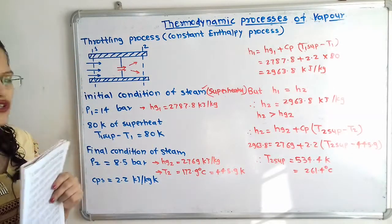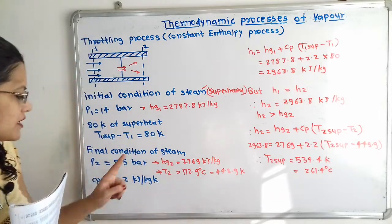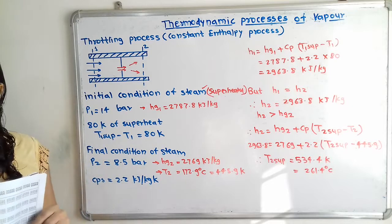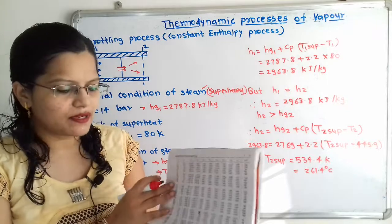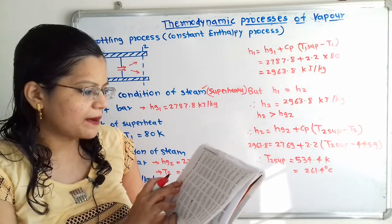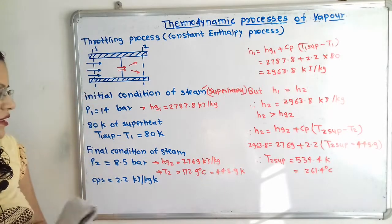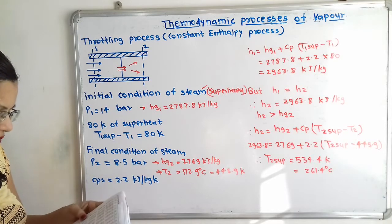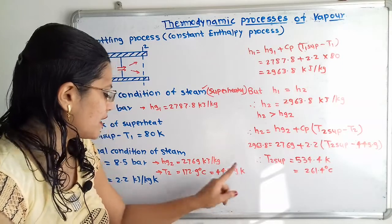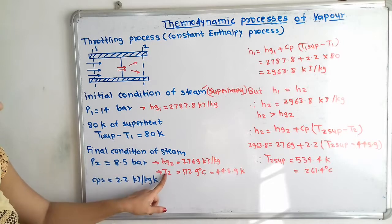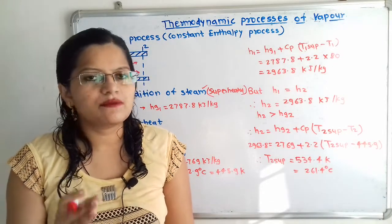We will now find out the final condition of steam. The pressure is given as P2 = 8.5 bar. At 8.5 bar pressure, we find the enthalpy of saturated steam from the pressure table. At 8.5 bar, the value of Hg is 2769 kJ per kilogram. The saturated temperature at 8.5 bar is 172.9°C, which converts to 445.9 Kelvin. This is the saturated temperature T2 for the final condition. We now need to decide whether the final steam is wet steam, dry and saturated steam, or superheated steam.